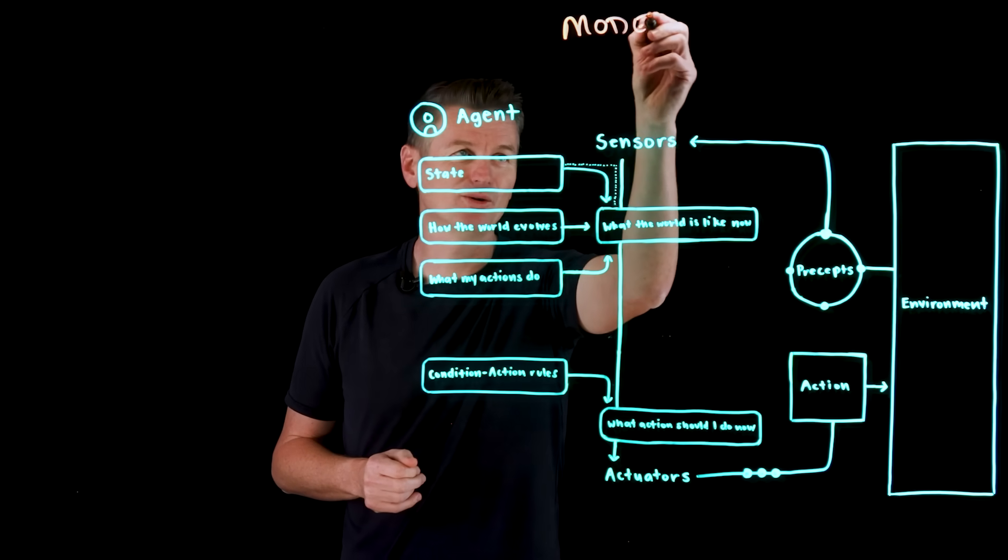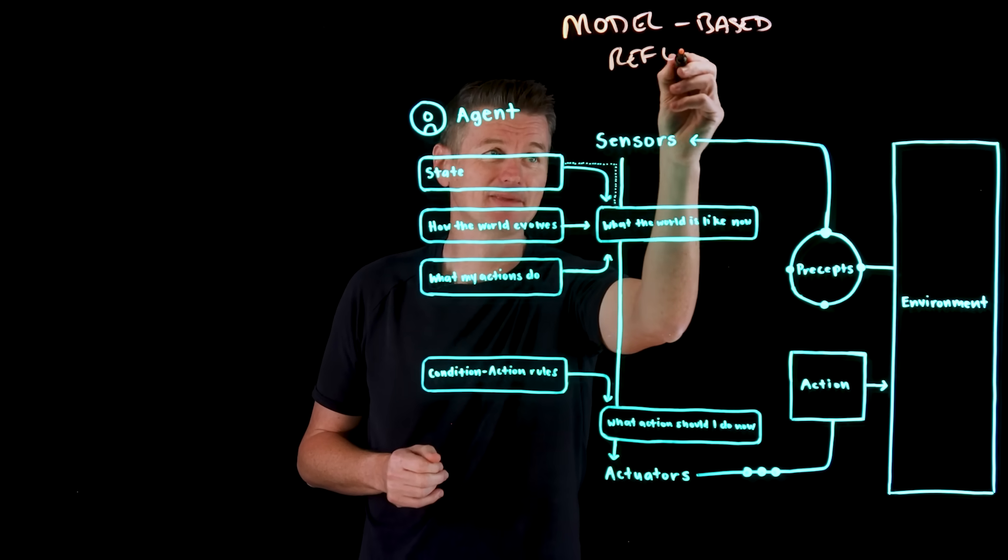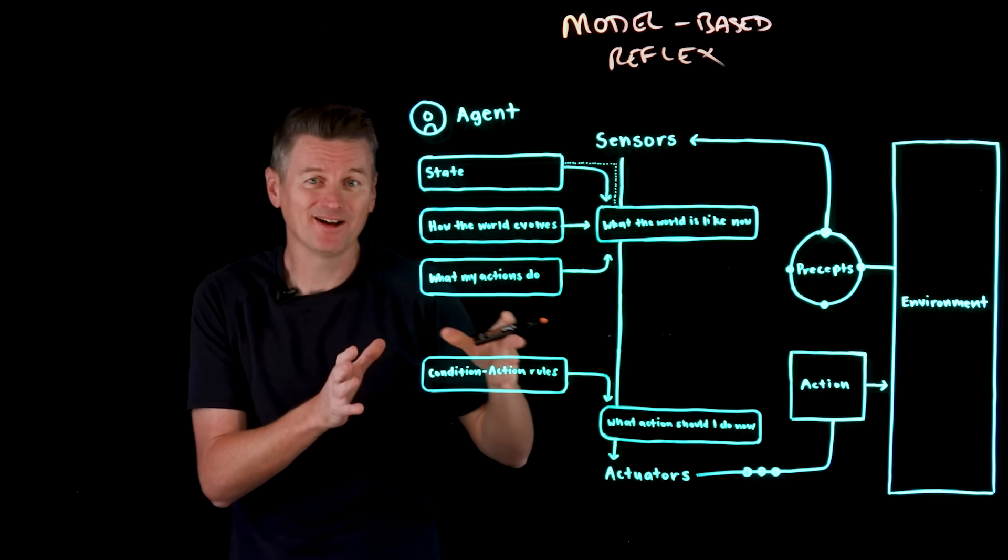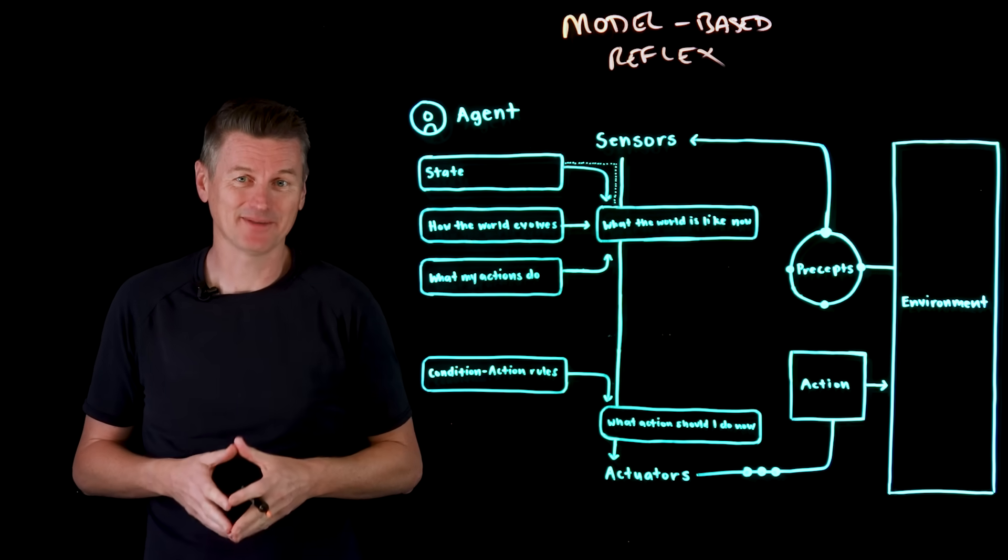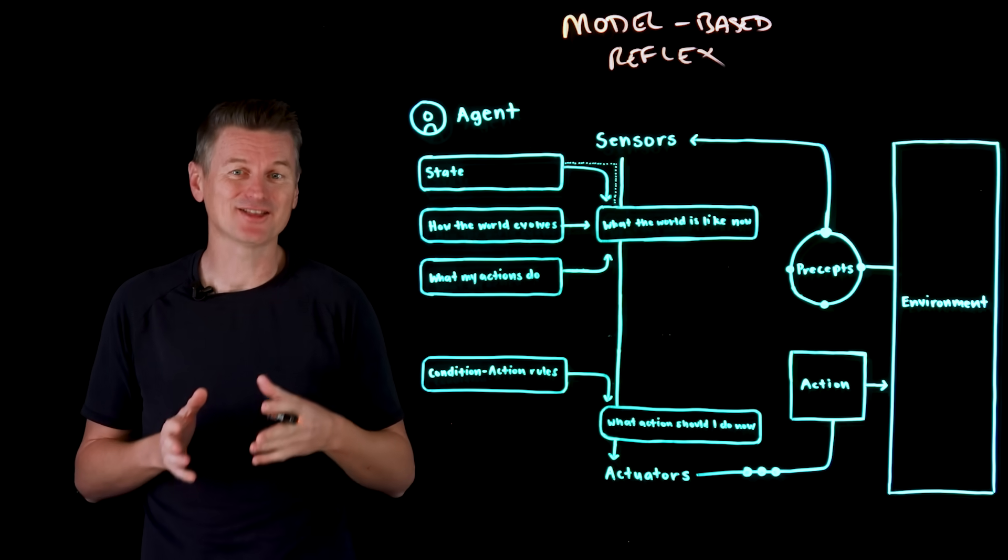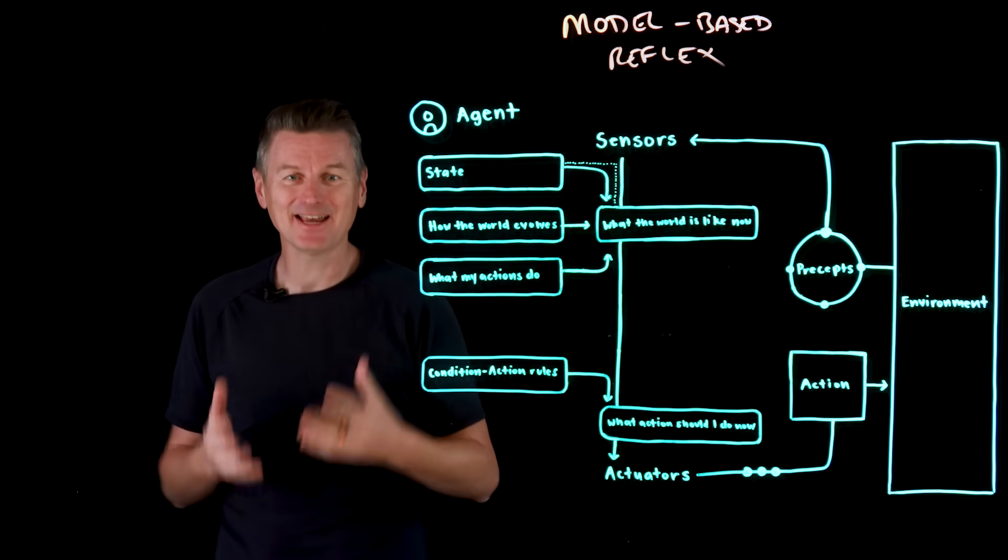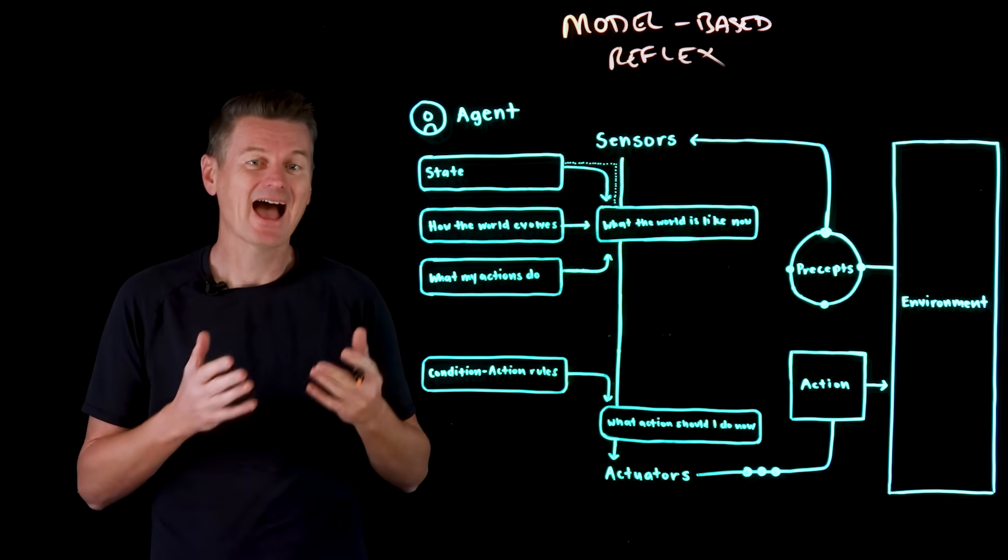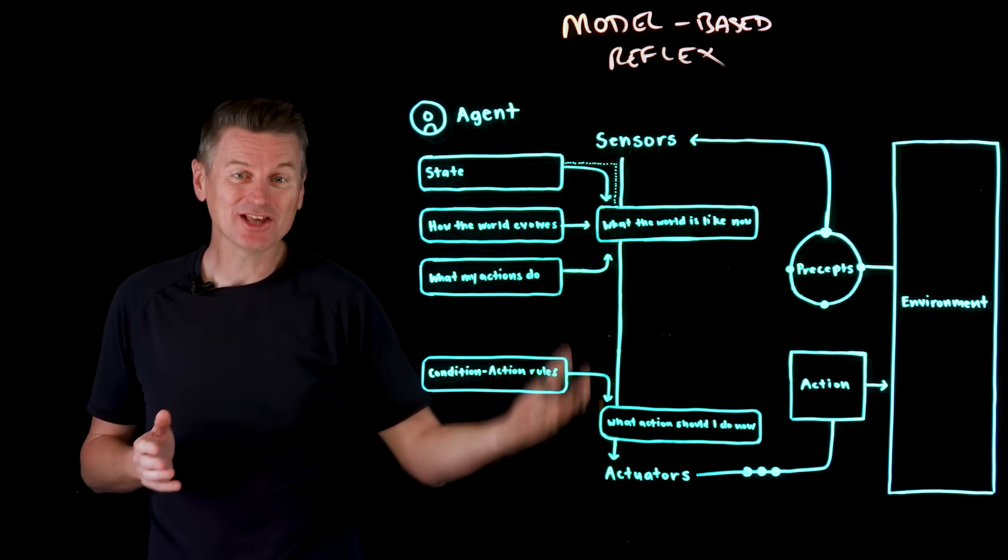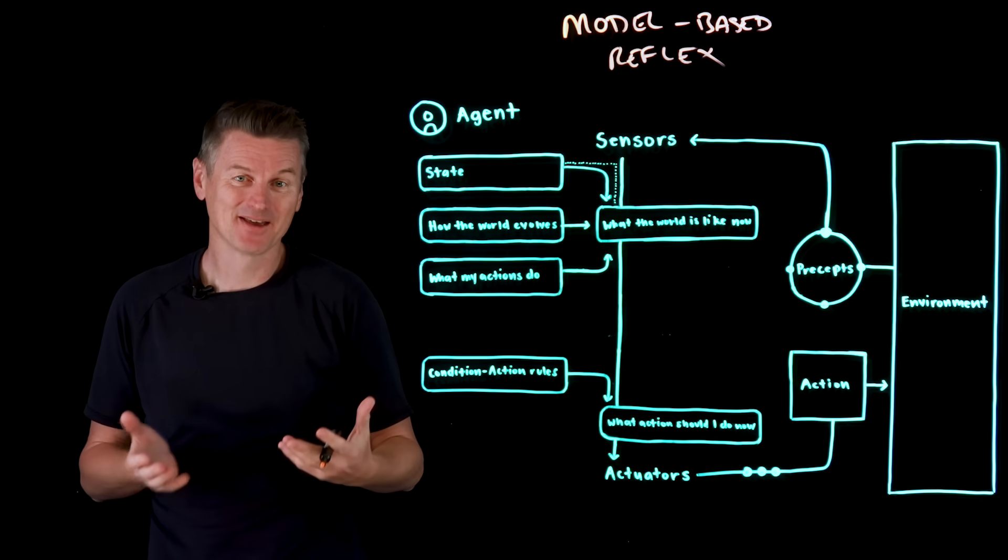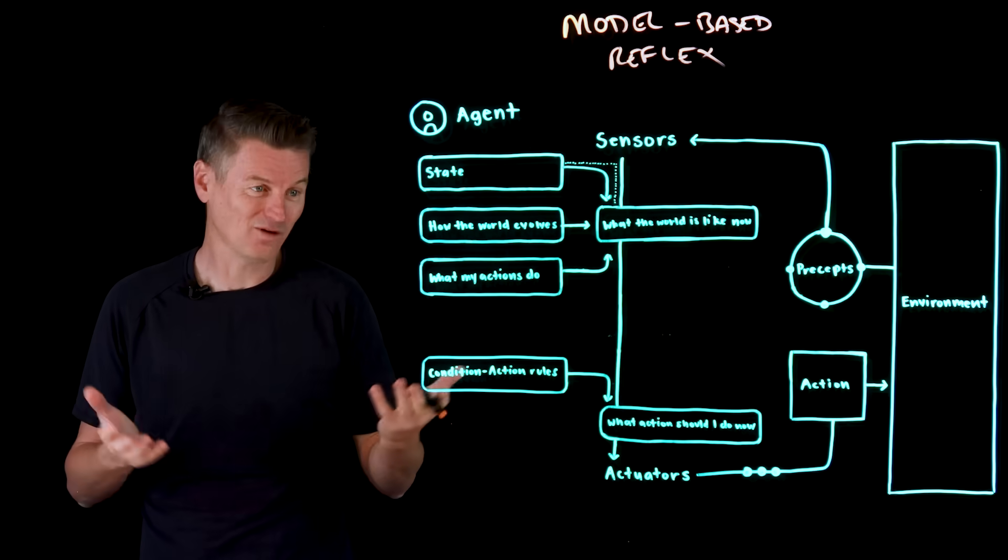How about this one? This is called a model-based reflex agent. This is a more advanced version of the simple reflex agent, and it uses condition action rules to make decisions as well, but it also incorporates an internal model of the world, and that's stored in the state component. And that state component is updated by observing how the world actually evolves, essentially how the environment changes from one state to another. The agent also tracks how its own actions affect the environment. That's what my actions do.